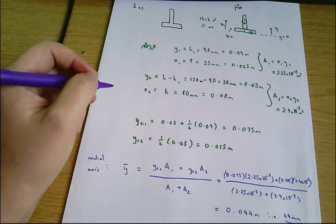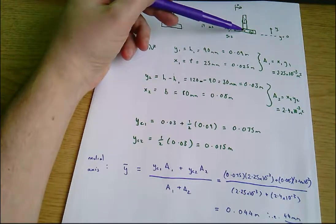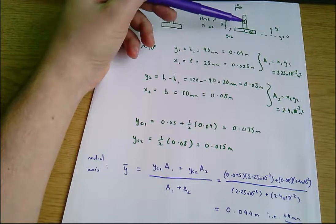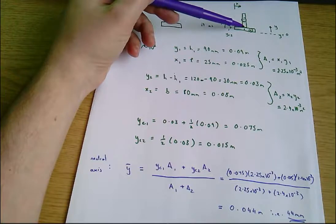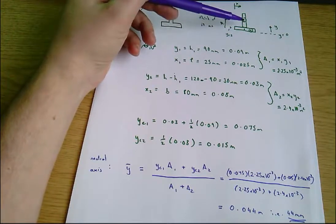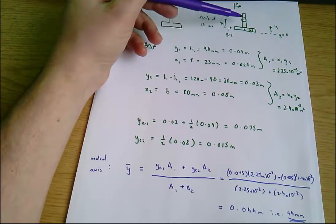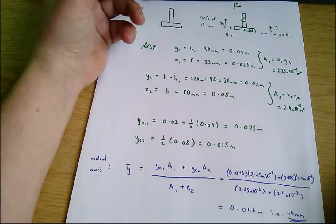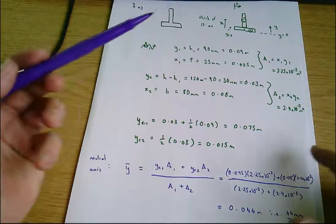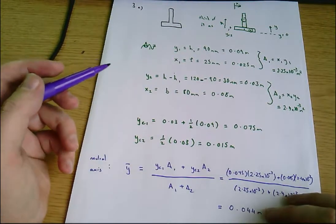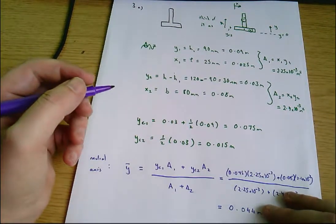At this stage you want to check whether the answer makes sense. You'd expect the neutral axis to lie between the centers of the two individual rectangles, since it's effectively a weighted average of them. And 44 millimeters is indeed between those two values, so that looks right. That completes the neutral axis part of 3A.